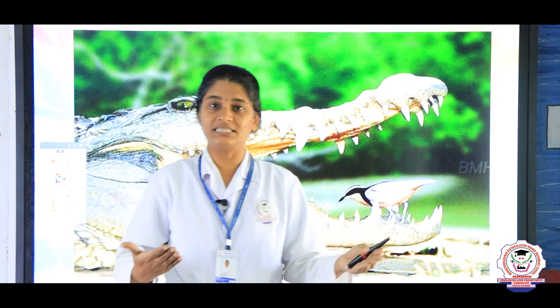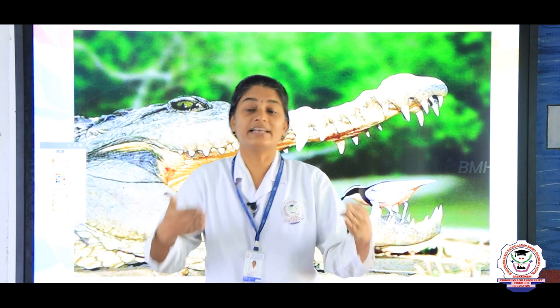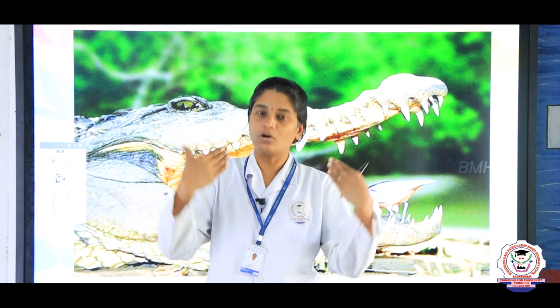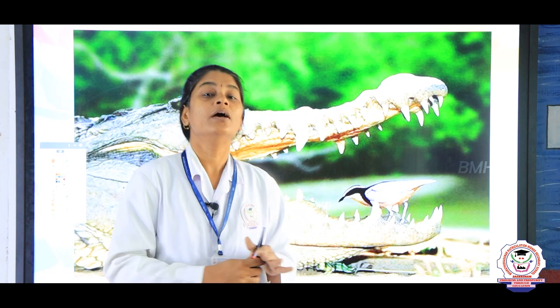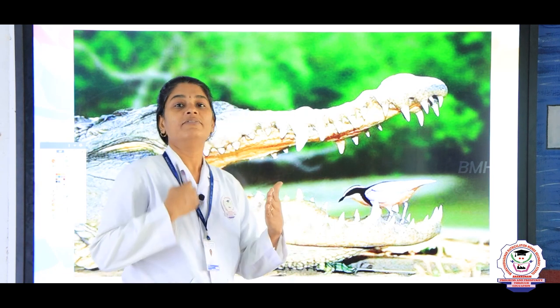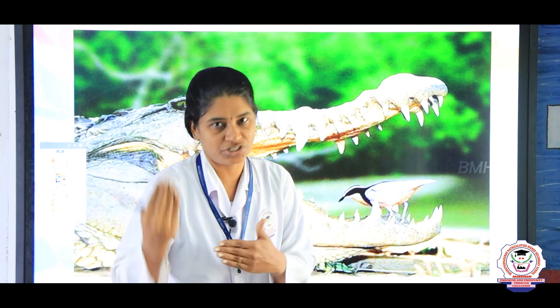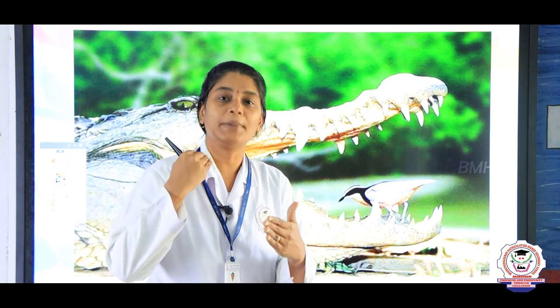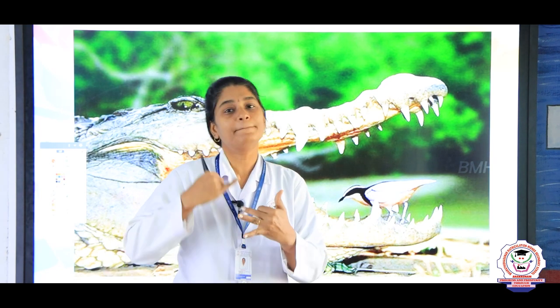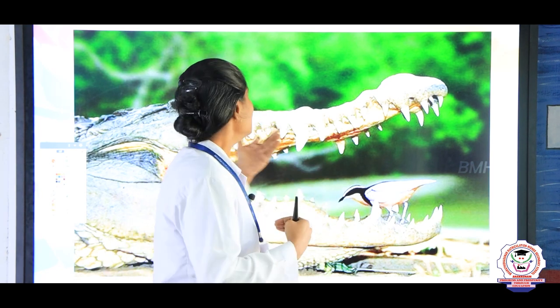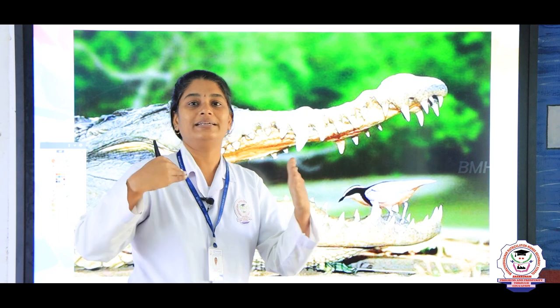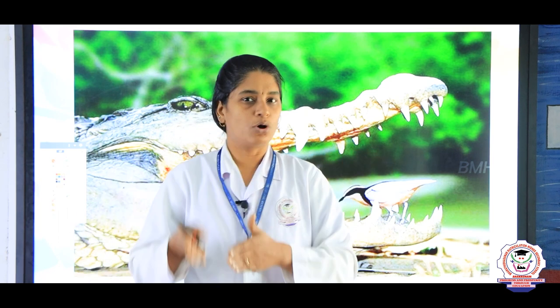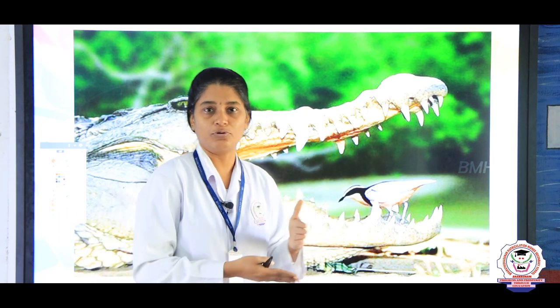To show the balance in nature and to show the interaction between the plants and animals, or between animals, there exist some associations. The terms that refer to these associations are symbiosis, predation, and parasitism. These are the associations that take place between living organisms. First we are going to see about symbiosis.